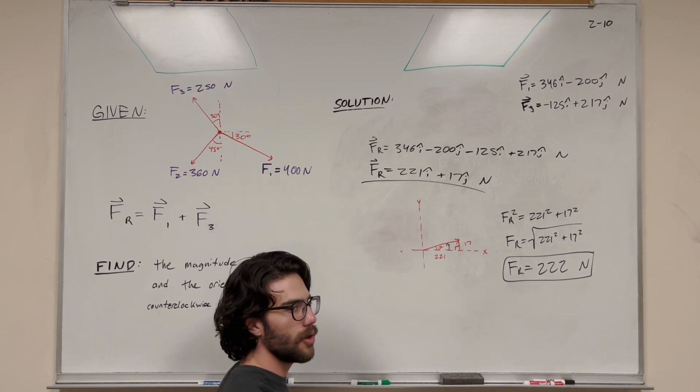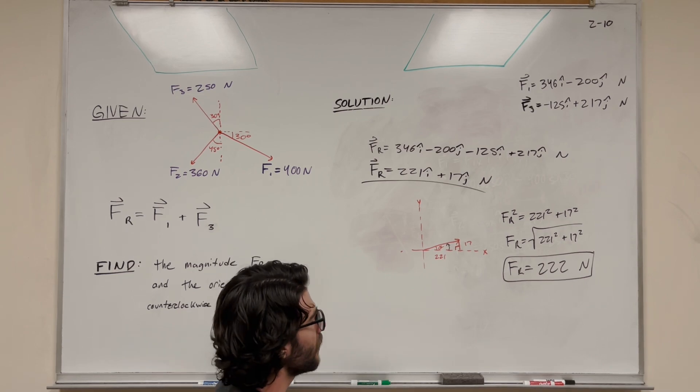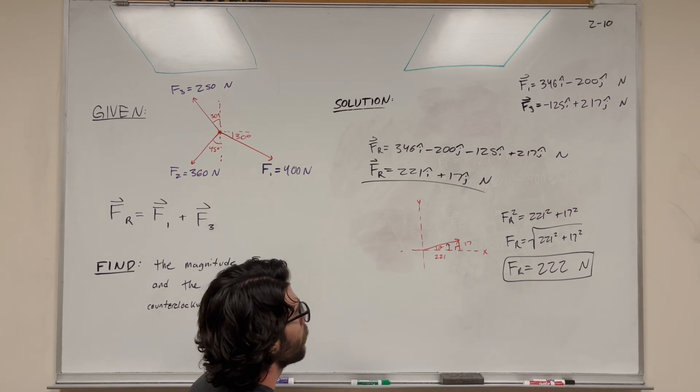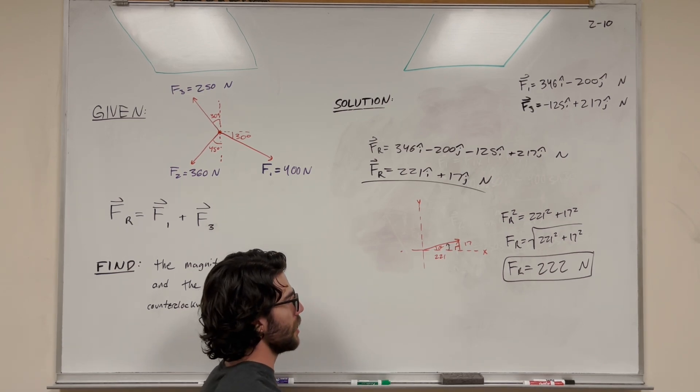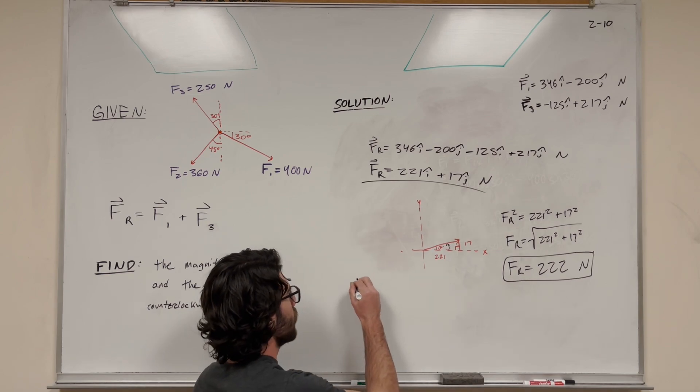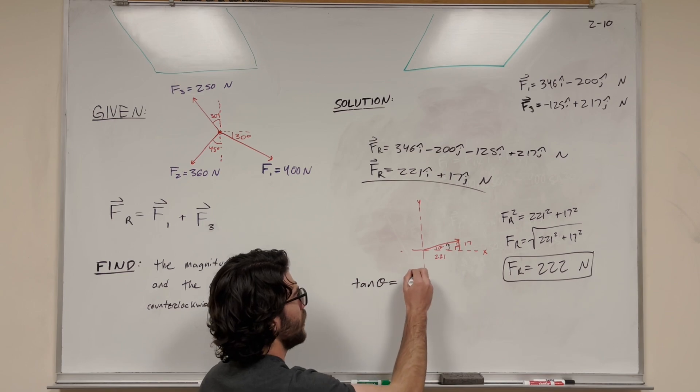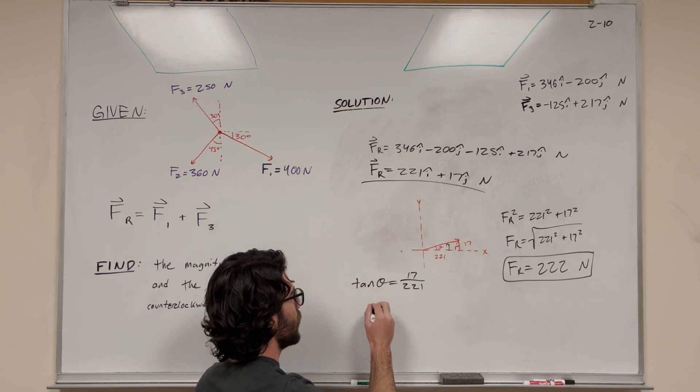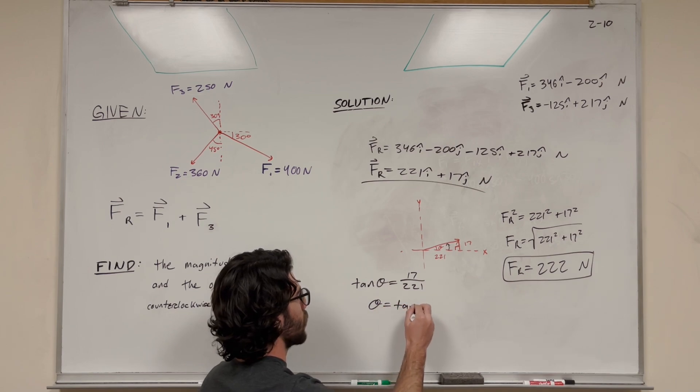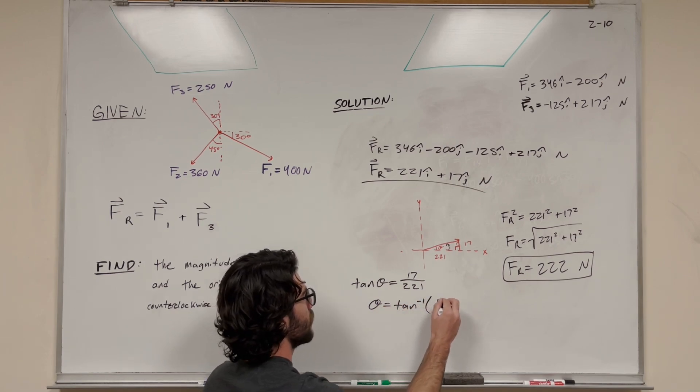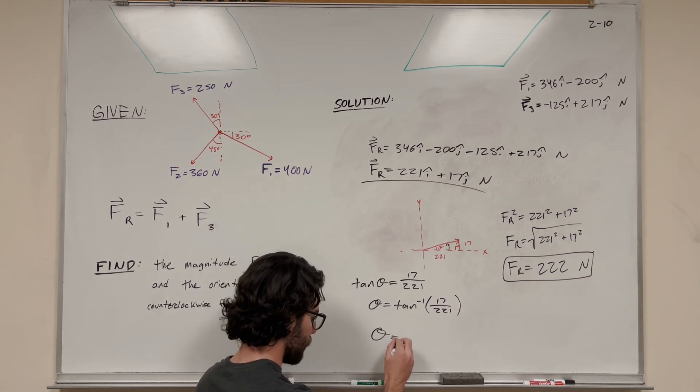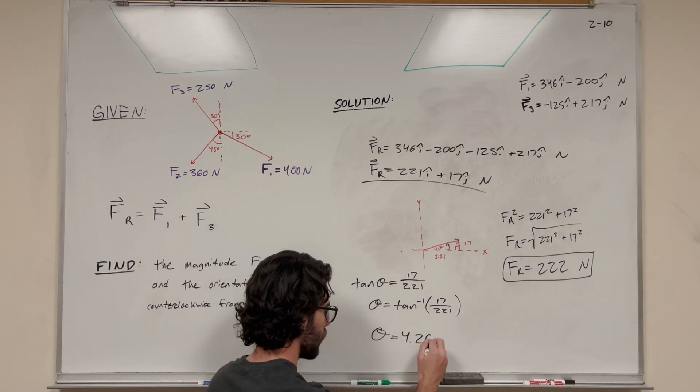This is our positive x-axis, and we want to go counterclockwise from it. That's this angle here, which I've denoted as theta. How do we find that? We use our trig identities - sine, cosine, tangent. I'll use tangent because that's usually the easiest. Tangent is opposite over adjacent. If theta is here, our opposite is 17 and our adjacent is 221. To find theta, we take inverse tangent of both sides. Theta equals inverse tangent of 17 over 221.